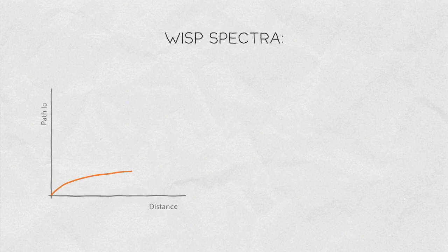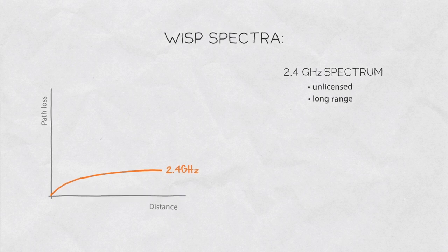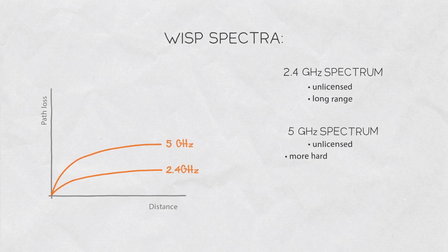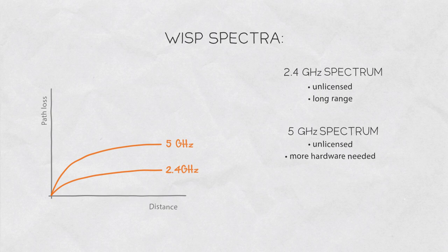WISPs often use 2.4 GHz spectrum because it's license-free and the RF waves travel further than higher frequency signals. The 5 GHz spectrum, which is unlicensed as well, has somewhat higher path loss, which can result in more hardware needed to cover the same area as with 2.4 GHz gear.